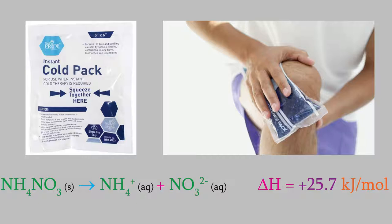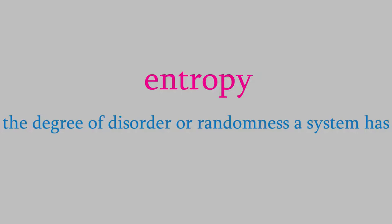That second factor is called the entropy. One way to think about entropy is that it's the degree of disorder or randomness that a system has. The more disordered a system is, the higher its entropy. There's a much more precise technical definition of entropy, but it involves some mathematics that you probably haven't had yet. You'll learn all about it if you take a course in physical chemistry. Anyway, the entropy is a measure of how disordered a system is.